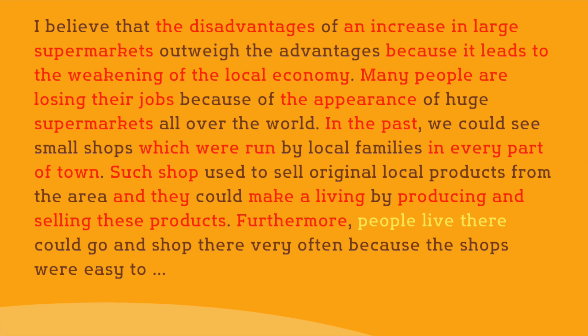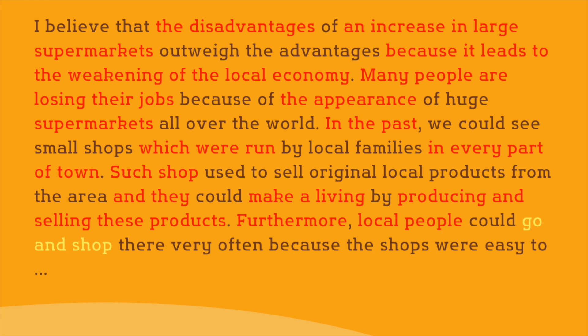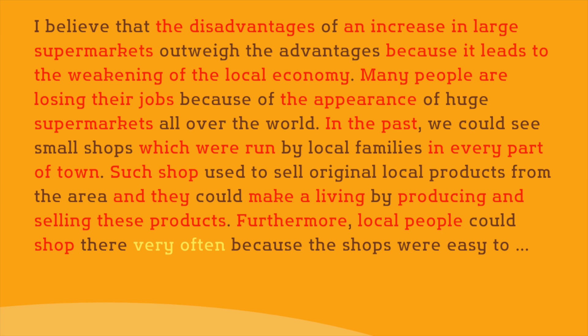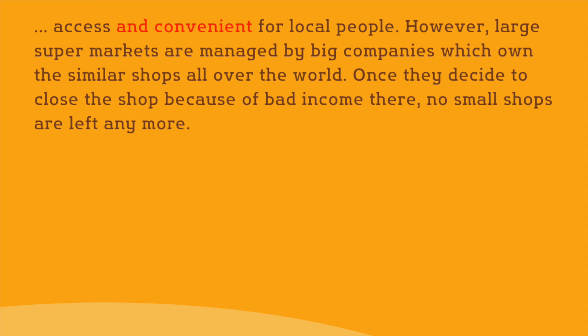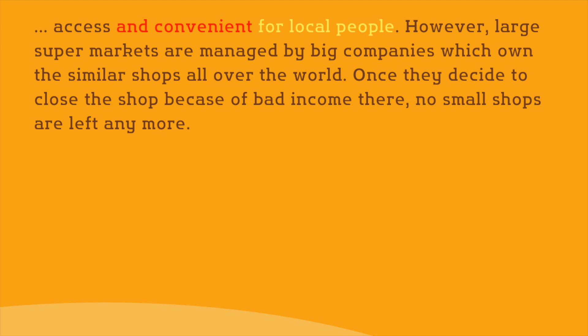'People live there' is a complete sentence and cannot be continued with another verb 'could go'. It is grammatically incorrect to say 'people live there could go'. The grammatically correct phrase would be 'people who live there could go', but this is a bit redundant, so it is better to say 'local people'. 'Go and shop' is also redundant, so it would be better to say 'shop'. 'Very often' is a bit colloquial and should be replaced by a written expression such as 'regularly'. As for 'which was convenient', the antecedent of 'which' is not clear; what is convenient seems to be the shops, so we should connect it with 'and'. 'For local people' is obvious to the reader, so it can be omitted.